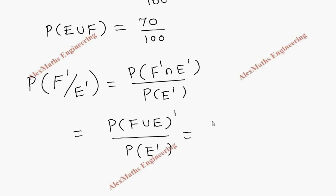But this is 1 minus P(F union E) whole divided by 1 minus P(E).